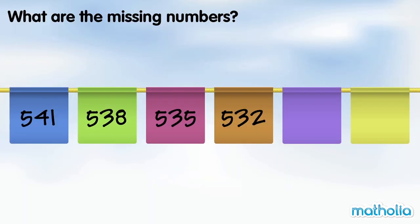What are the missing numbers? 541 minus 3 is 538. 538 minus 3 is 535. In each step the numbers go down by 3. 542 minus 3 is 539.